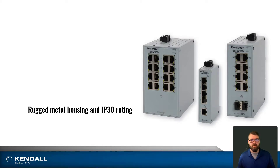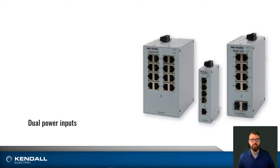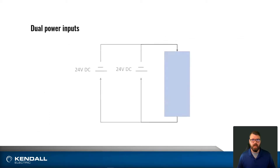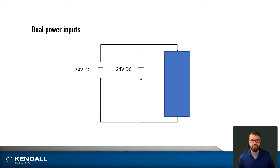Another great feature is the dual power input, which allows you to hook up multiple power supplies to these switches. In this example, we have two power supplies connected to the terminal blocks on the Stratix 2000 switch. If one of those power supplies were to fail, our switch would still continue to operate and our network would still remain working.